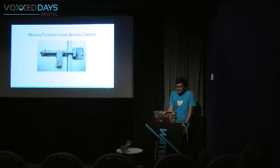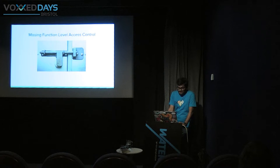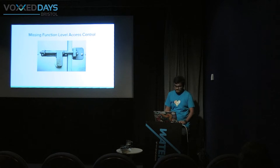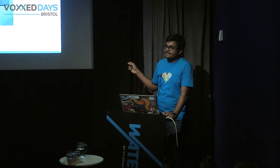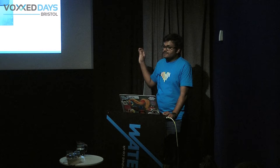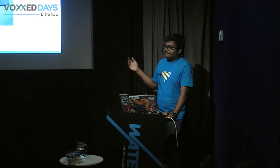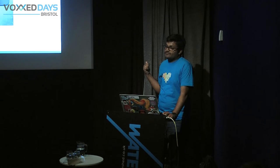Next is missing functional level access control. Most web applications check functional level access rights before making functionalities visible in the UI. That same kind of access check needs to be done on the server side before sending to the browser. If that doesn't happen, it leads to the missing functional level access control vulnerability.